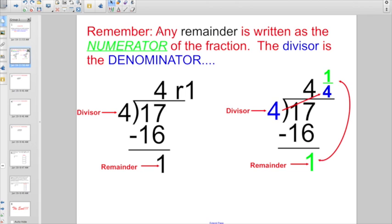But starting off, remember, any remainder is written as the numerator of the fraction. The divisor is the denominator. Because the old way of dividing 17 divided by 4, that would give us 4 remainder 1. But now that we can do it as a mixed number, the divisor of 4 is the denominator. The remainder is the numerator. So if they ask for the quotient as a mixed number, you don't want 4 remainder 1. You want 4 and one-fourth.